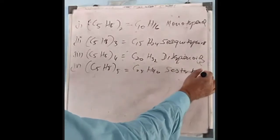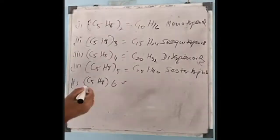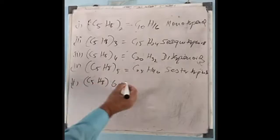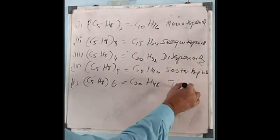These sesquiterpenoids are the most recently invented group. Then for n equals 6, C5H8 gives C30H48, so this represents the triterpenoids.